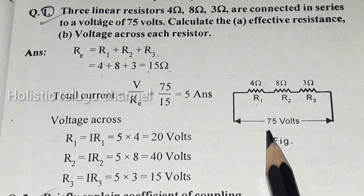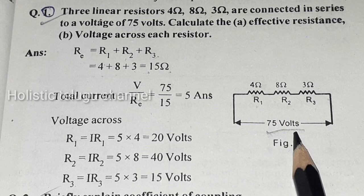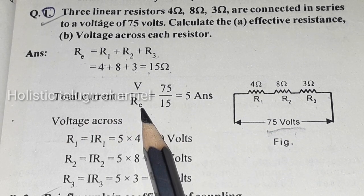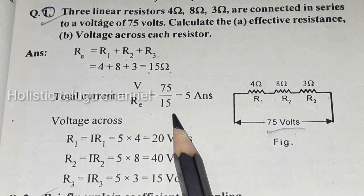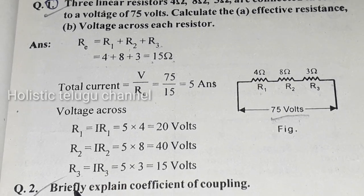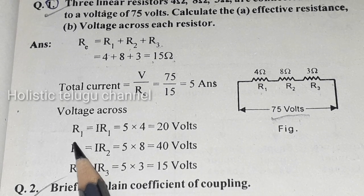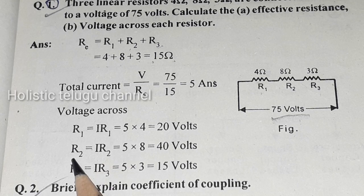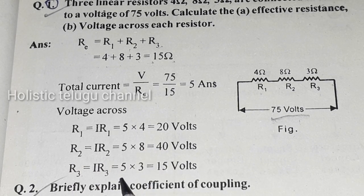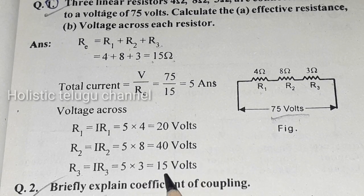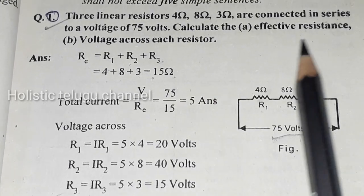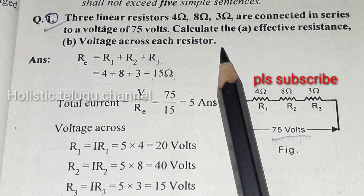Since the resistors are connected in series with voltage of 75 volts, total current I equals V divided by total resistance, which is 75 divided by 15 equals 5 amps. Voltage across each resistor: V1 equals 5 times 4 equals 20 volts, V2 equals 5 times 8 equals 40 volts, V3 equals 5 times 3 equals 15 volts. This completes the short question on effective resistance and voltage across each resistor.